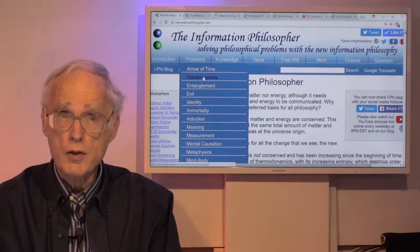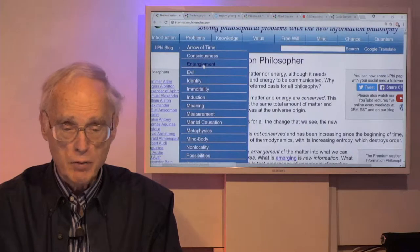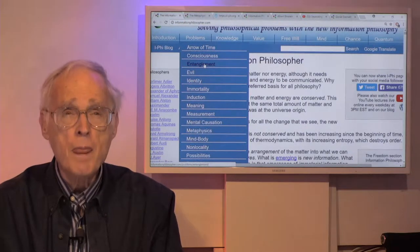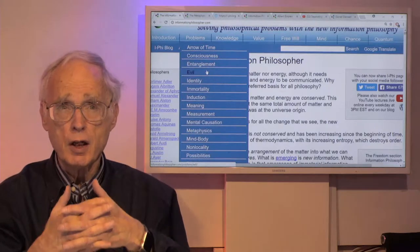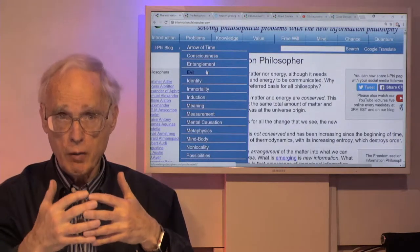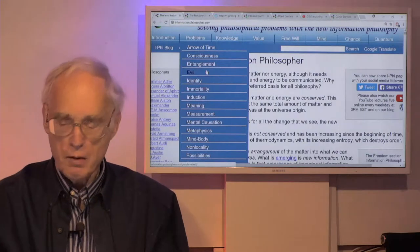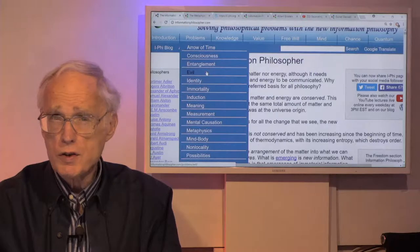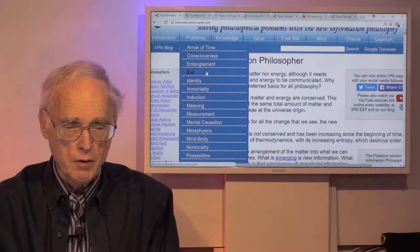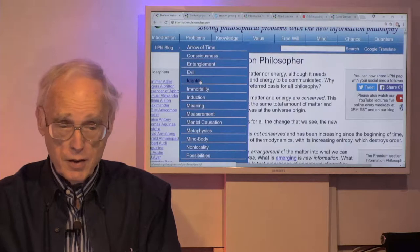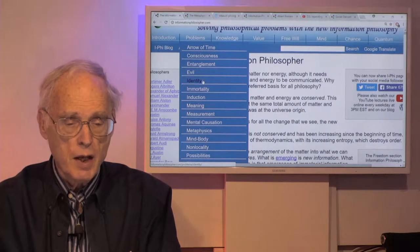Coming back here then, the webpage has, among other things here, a list of all the problems, specific problems. We spoke about the problem of consciousness on our opening lecture. Today's our 20th, so 19 lectures ago. Entanglement is something we'll get to again, especially as it involves Albert Einstein. The problem of evil comes from this point of view that if the universe contains something good in it, something ordered and informed information, like life.